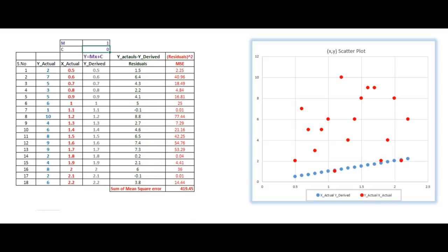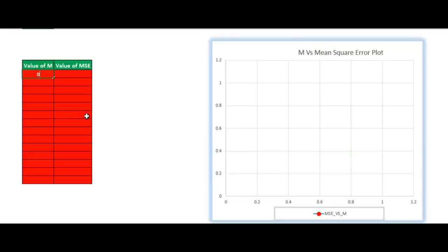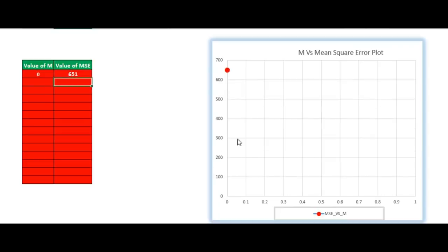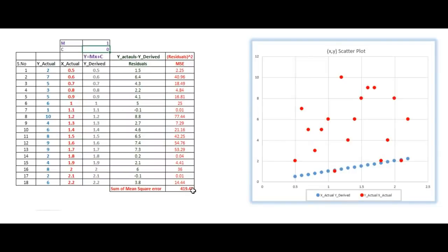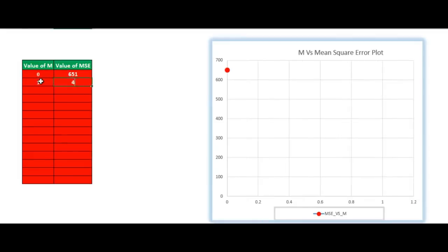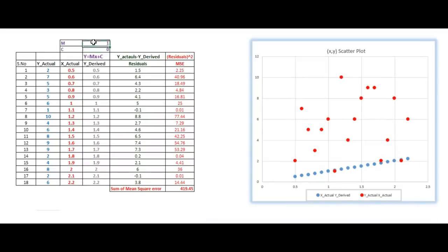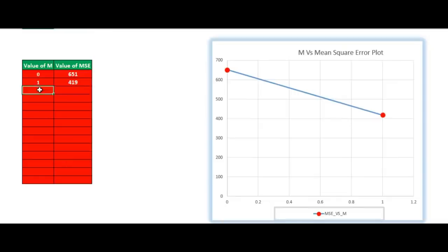Now let's put up a plot where we are going to change the value of m and also check out how my mean square error looks like. So let's put a value of m 0 first. For 0, my mean square error is 651. Let's put this in a table. Now let's increase it to 1. So my mean square error is now 419. Let's again put this to the table. Now increase the value to 2. My mean square error is 263 now.